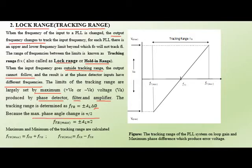The maximum phase angle change is ±π/2 because the conversion gain K0 spans 0 to π, but it is half of that — π/2. This figure shows the tracking PLL loop and the maximum phase difference which produces the error voltage.